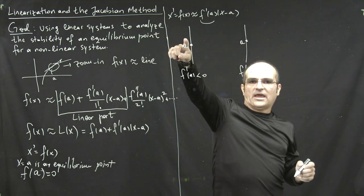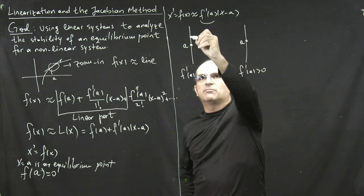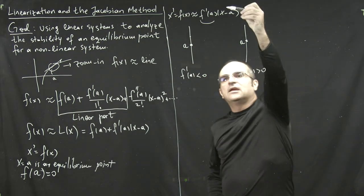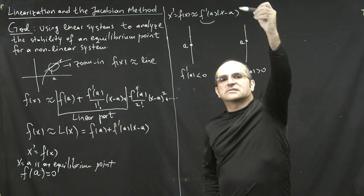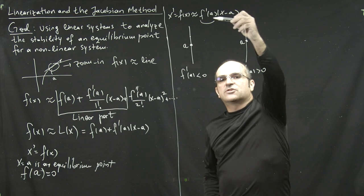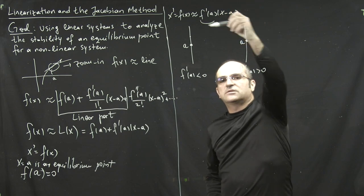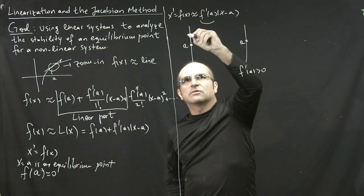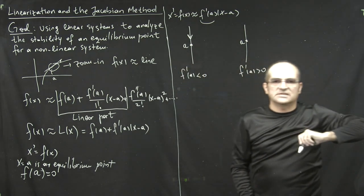If I start above a, if I pick a point above a, greater than a, this quantity will be positive. But, because the derivative is negative, when I multiply, the overall sign is negative. So, the motion is toward the equilibrium.